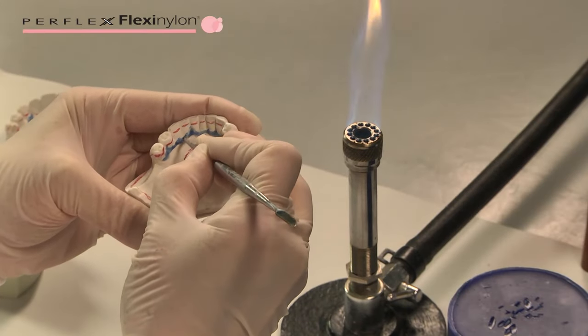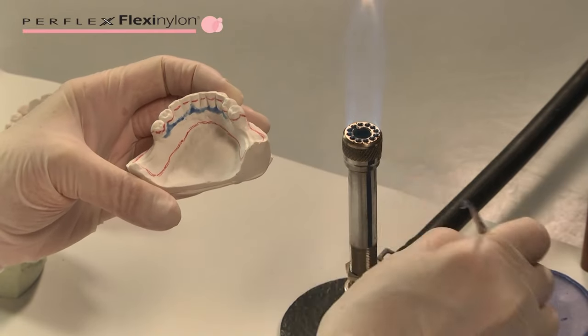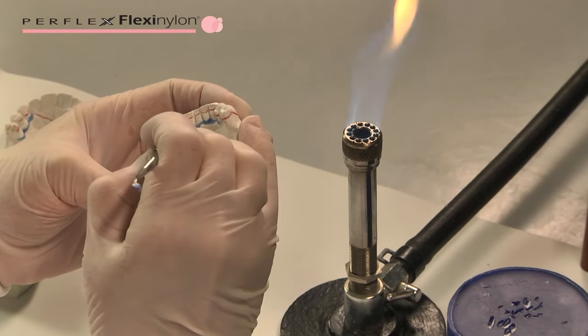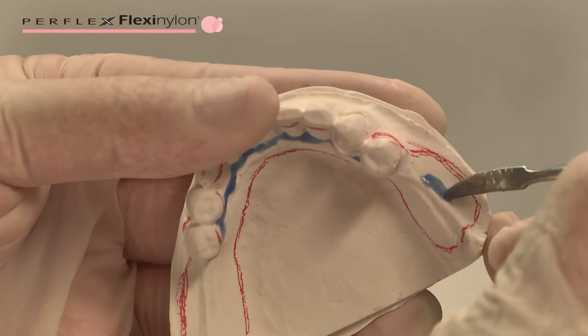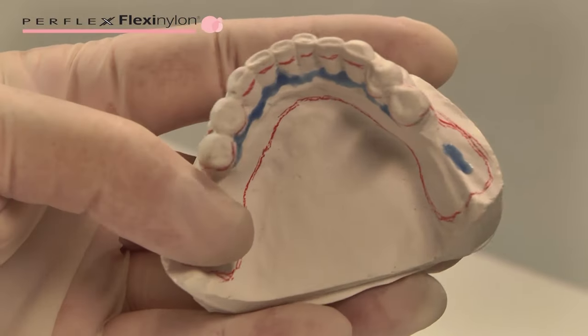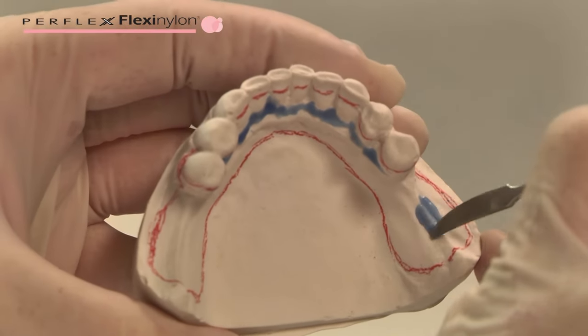All undercuts affecting the path of insertion should be blocked out, but less than conventional block out for metal frameworks. Undercuts in the buccal and distal that are engaged for retention should not be relieved, except where more rigid junction points would cause some irritation for the patient.